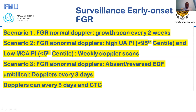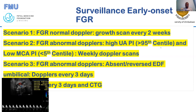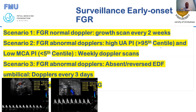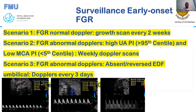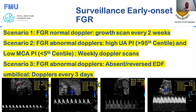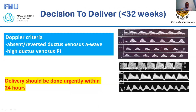We also perform CTG at appropriate frequency so that timely interventions can be conducted. The main decision to deliver in early onset fetal growth restriction is based on the ductus venosus. Even if we have reversal of flow in the umbilical artery or a low PI in the MCA, the decision to deliver before 32 weeks is based on the ductus venosus Doppler.